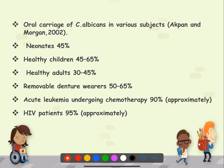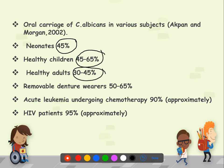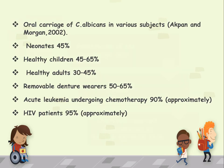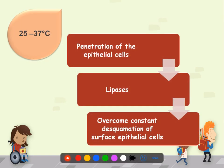Candida albicans can be found in various subjects: 45% of neonates, 45–65% of healthy children, 30–45% of healthy adults, 50–60% with removable dentures, approximately 90% of patients with acute leukemia undergoing chemotherapy, and approximately 95% in HIV patients. The organism is active at 25–37°C, where it penetrates epithelial cells with the help of lipases, allowing it to overcome the constant desquamation of surface epithelial cells.